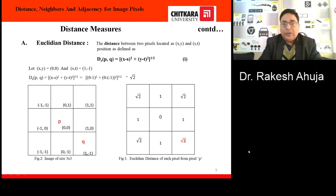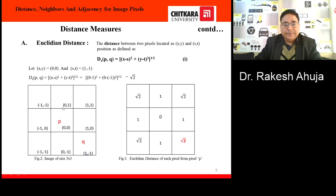Euclidean distance: the distance between two points located at coordinates (x, y) and (s, t) is defined by the square root of (x minus s) squared plus (y minus t) squared. For example, with an image of size 3 by 3, suppose p is at location (0, 0) and q is at location (1, -1). Putting these values in the distance formula, we obtain the value square root of 2. Likewise, we can calculate the distance of the rest of the pixels and obtain values in this manner.